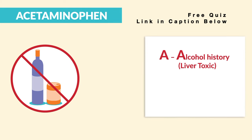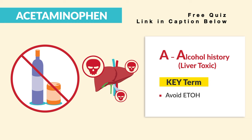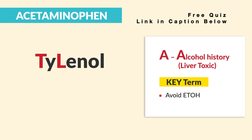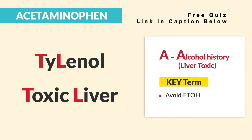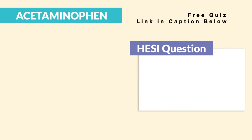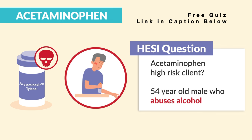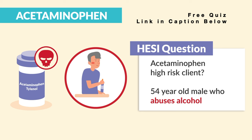Now A is for alcohol history — basically liver toxic. So the key term is we avoid ETOH and alcoholics. Think TL: Tylenol is TL for toxic liver. Now a common HESI question for acetaminophen is trying to determine a high-risk client — so the 54-year-old male who, key term, abuses alcohol.